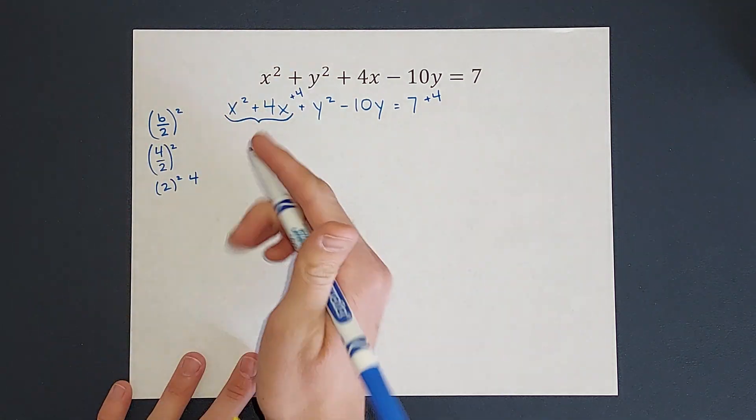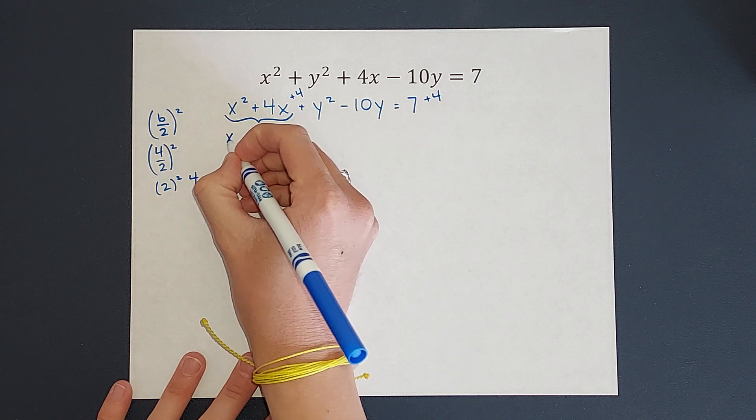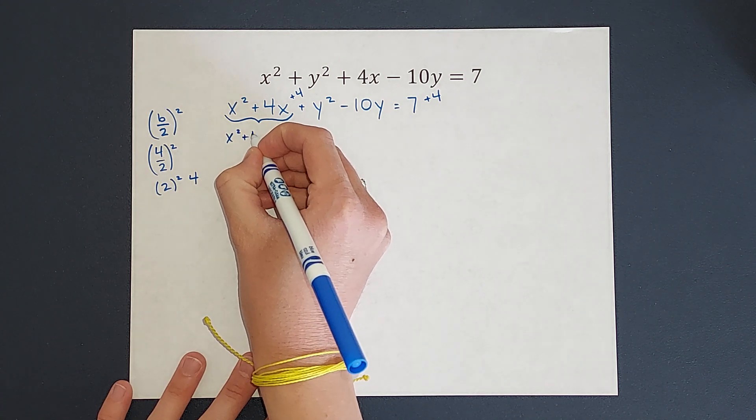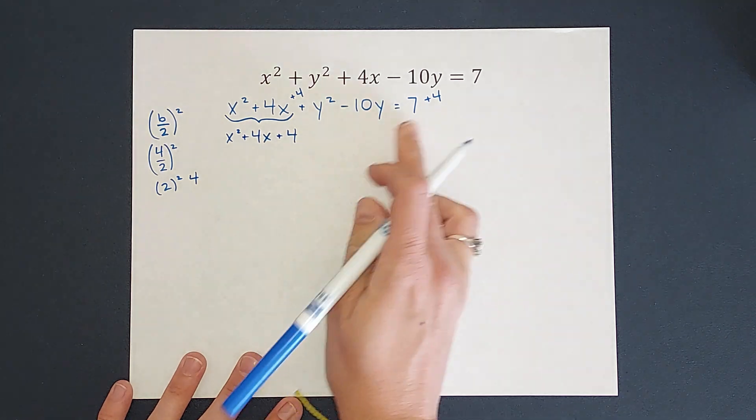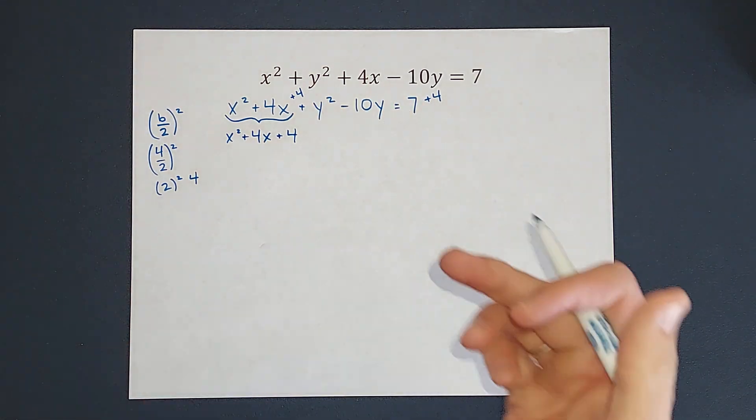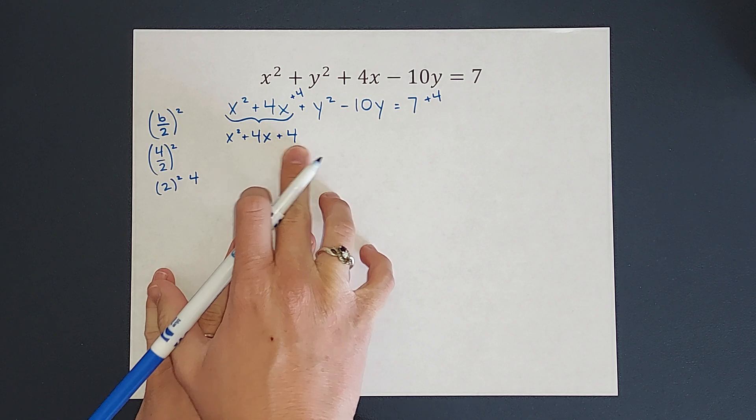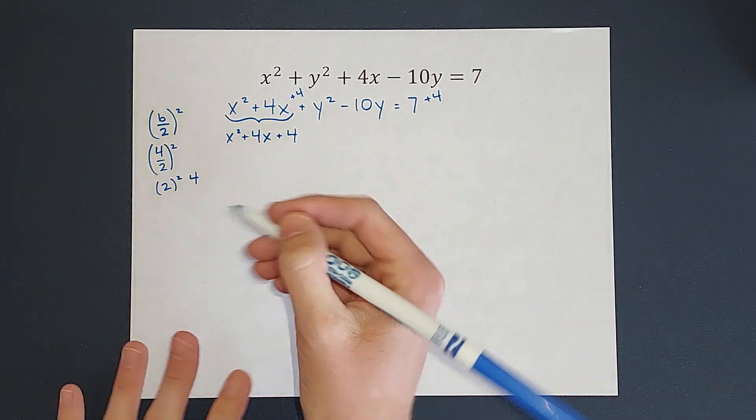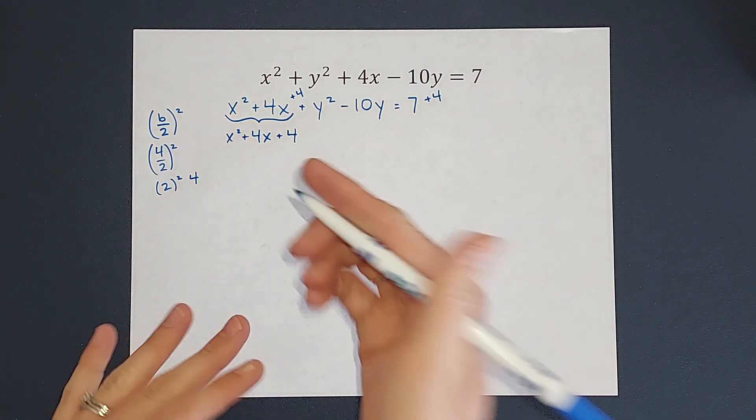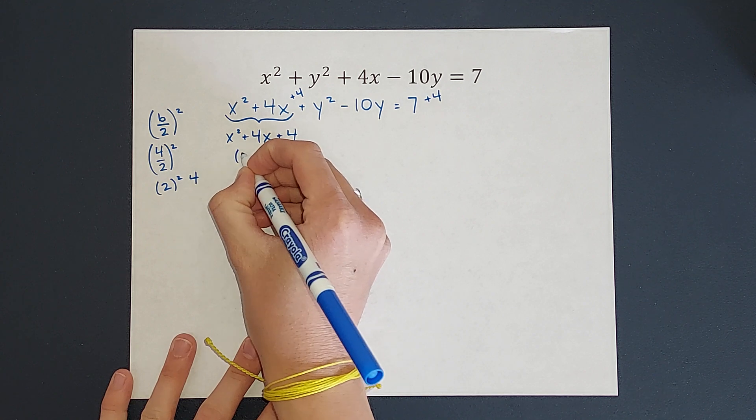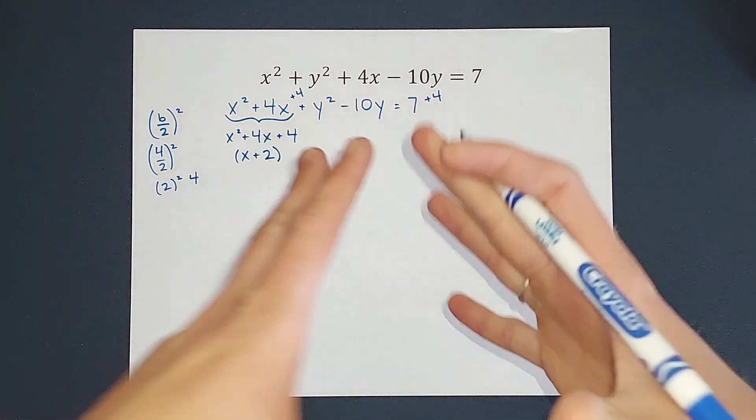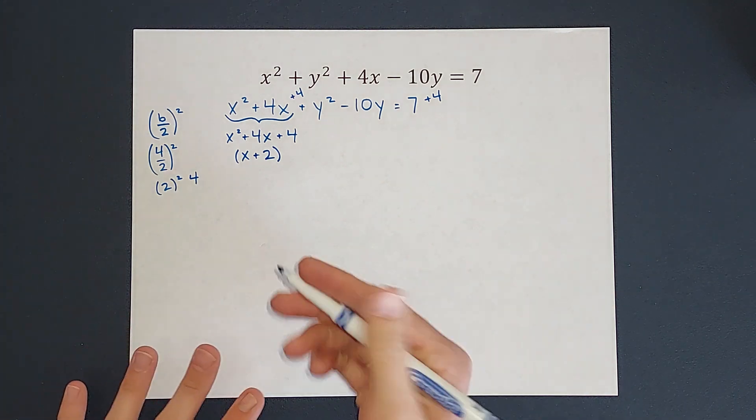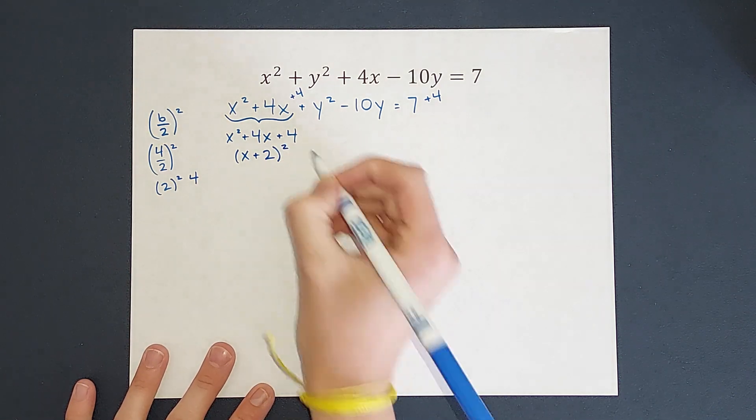So for a second, I'm just going to rewrite the x's. So we have x squared plus 4x, and then that 4 we added. The y's are still there. We're just ignoring them for two seconds. So when I factor this, because I'm doing completing the square, I know when I factor it, it's going to be x plus 2 times x plus 2, or I could just write it as x plus 2 squared, right?